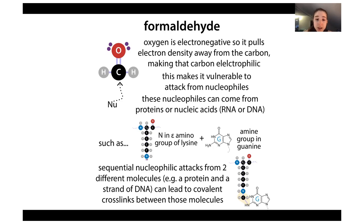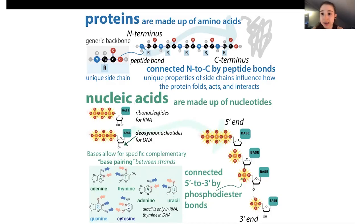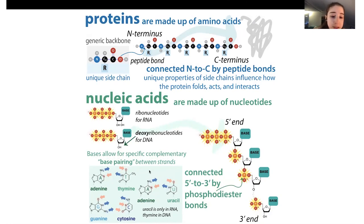This electrophilic carbon, having electrons pulled away by the oxygen, is vulnerable to attack from nucleophiles. We can find nucleophiles in various places in proteins and in DNA and RNA. With nucleic acids, they can occur in the base parts that stick out - the nitrogens in amine and imine amino groups can serve as nucleophiles.